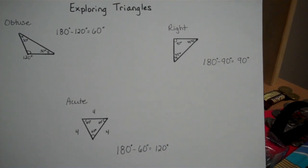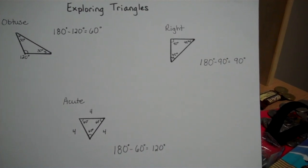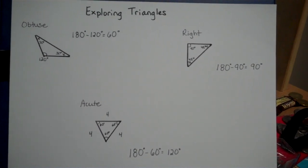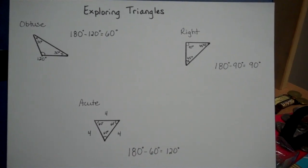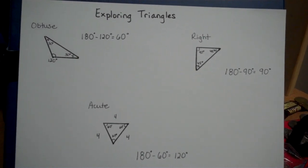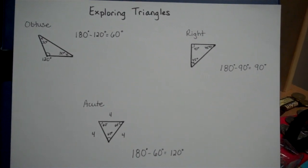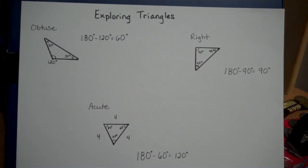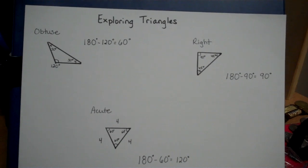Some questions have come up about why there is only one obtuse angle in an obtuse triangle, one right angle in a right triangle, but three acute angles in an acute triangle. We already know from class when we explored triangles that all of the inside angles of a triangle have to add up to 180 degrees.